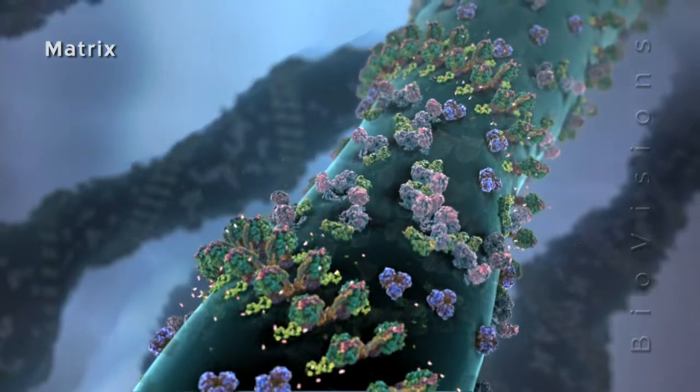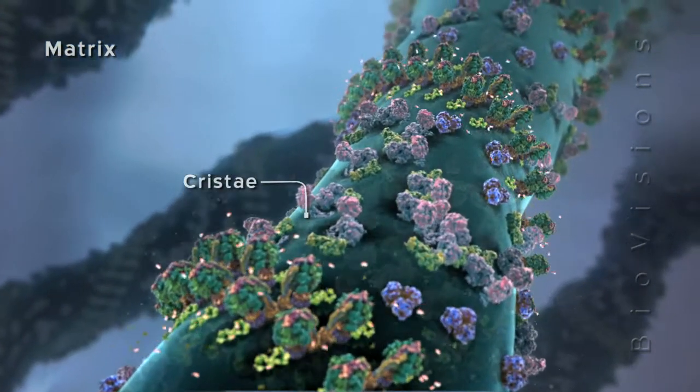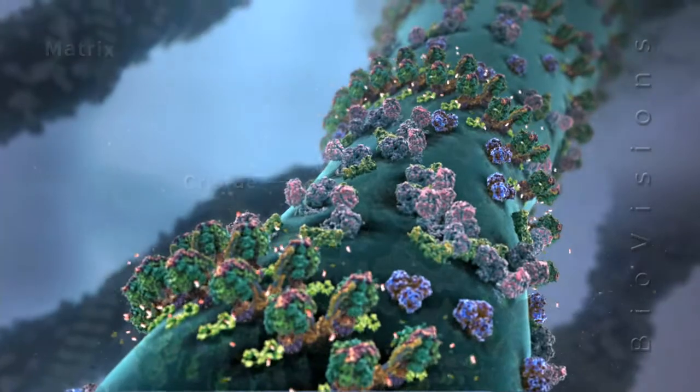Invaginations of the inner membrane, called cristae, contain four large protein complexes that harvest electrons from these carriers.